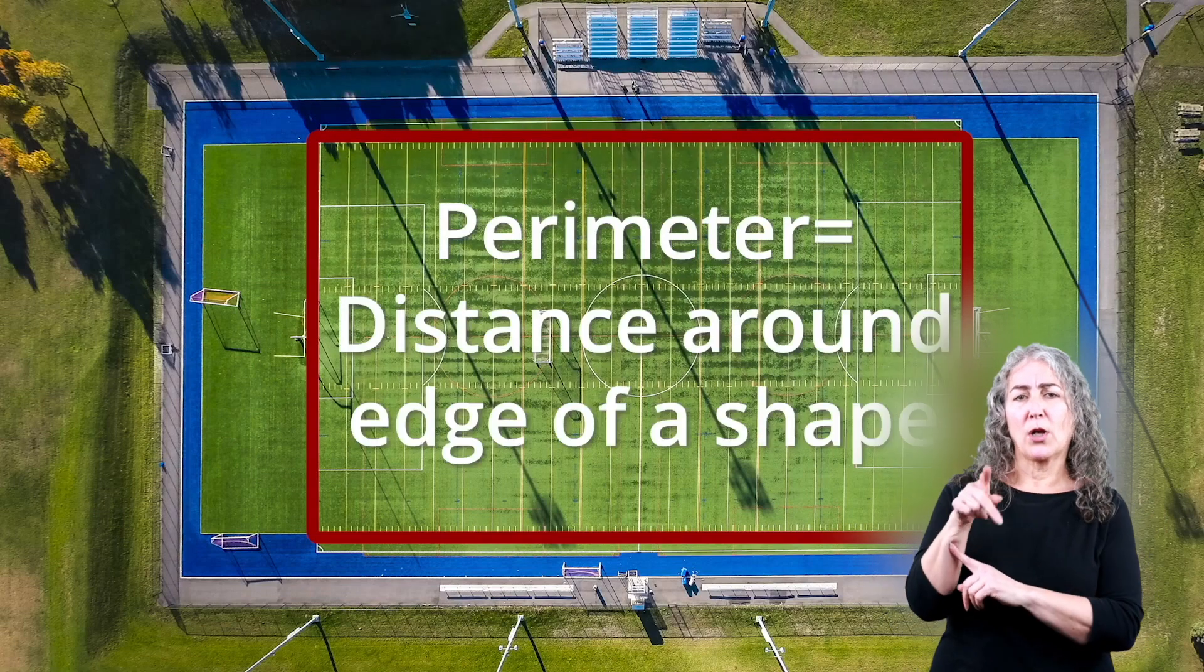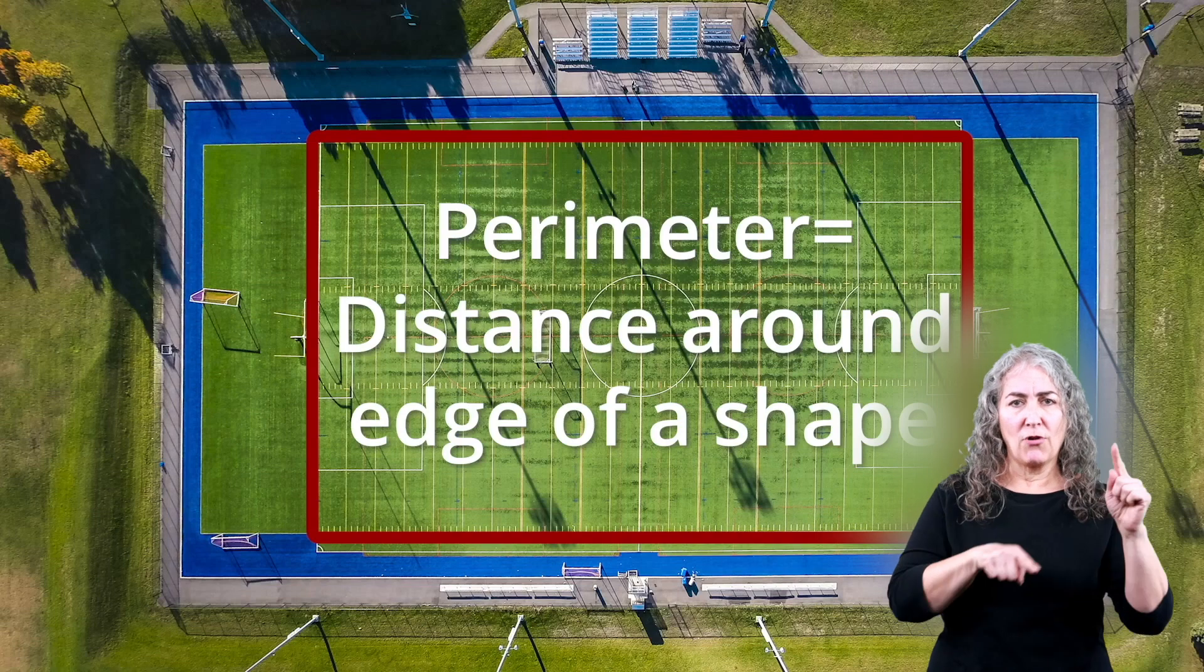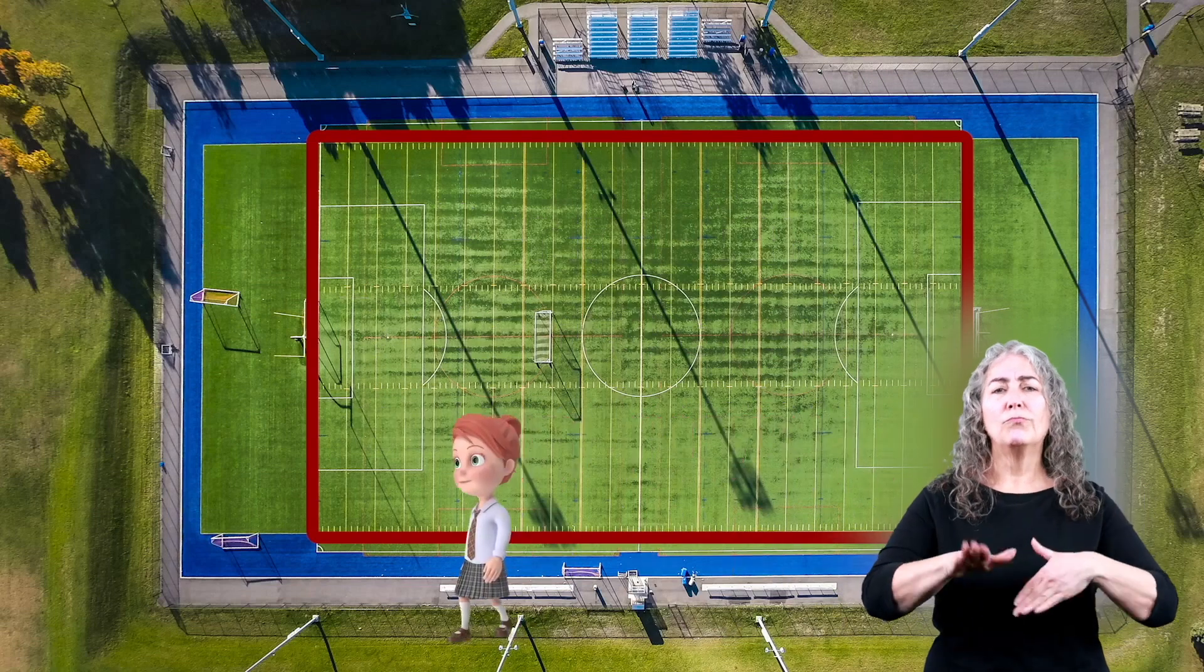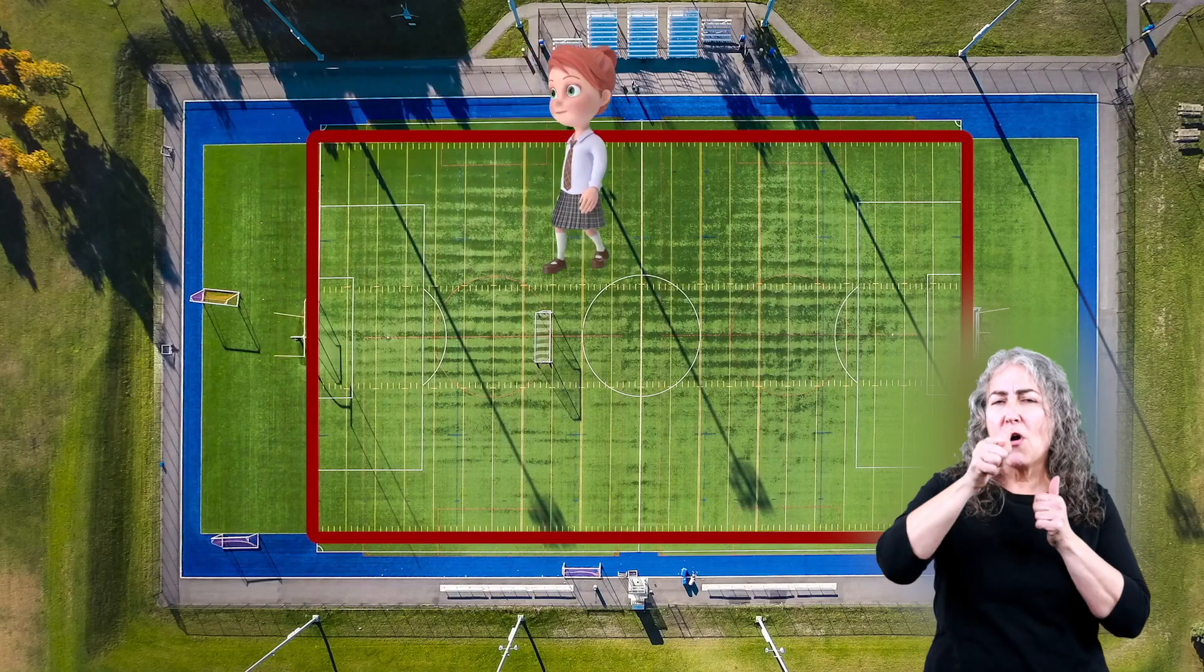Simply put, the perimeter of a shape is the distance around the edge of it. Walk along that red line, measure how far you've gone, and you'll have the perimeter.